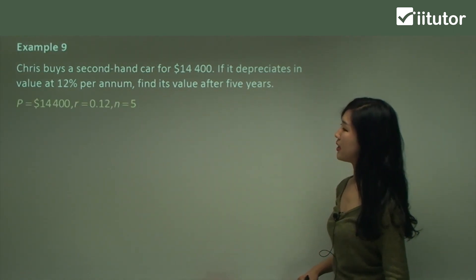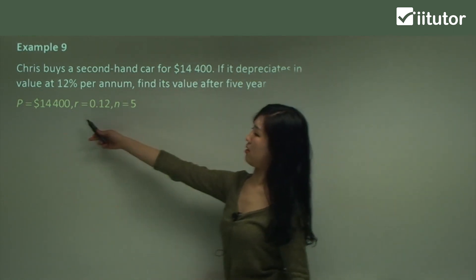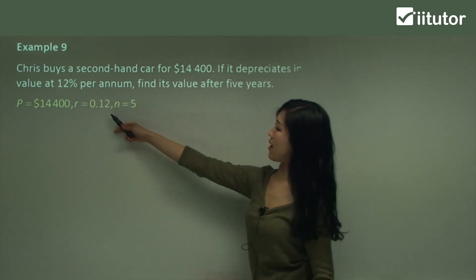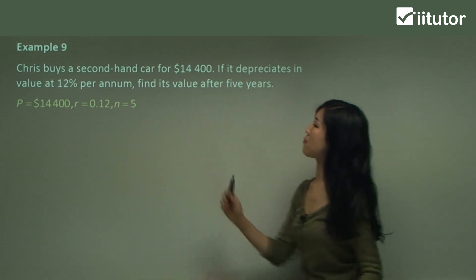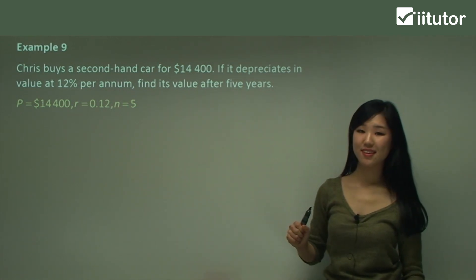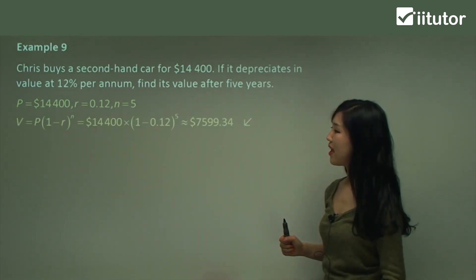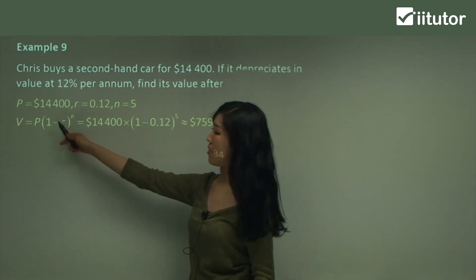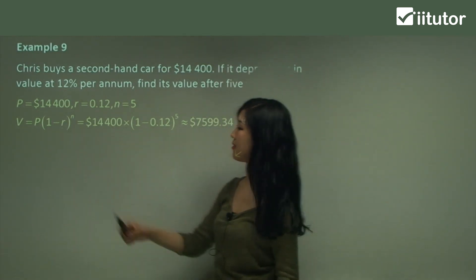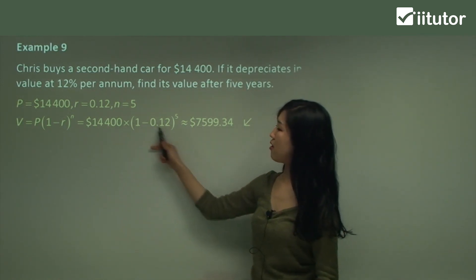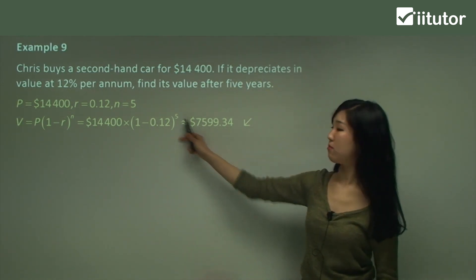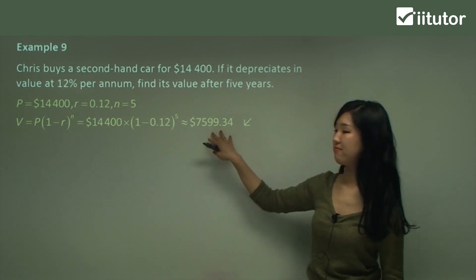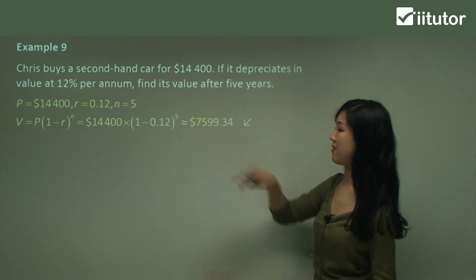So I'll start by identifying what p is, the initial value. The rate is 12%, the number of terms is simply five years. Now put it into your depreciation formula, that one there, where the sign is negative or minus. Put your values in—the initial value, the rate, and the number of terms. Just put it into a calculator. That's the value of the car in five years' time.